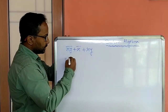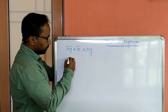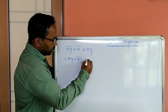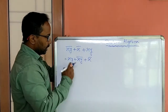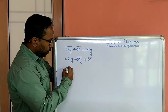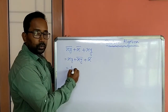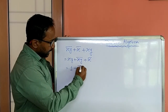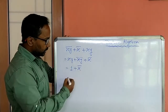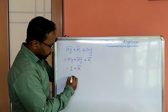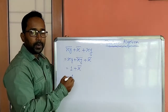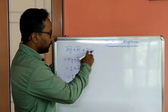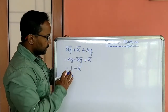Now let me rearrange this product terms: xy plus xy whole not plus x not. Now xy plus xy not equals 1 according to the complementarity law. Then plus x not remains as it was. Now 1 plus x not equals 1 according to the property of 1 law. So this is the simplified value of this boolean expression. This is very simple.